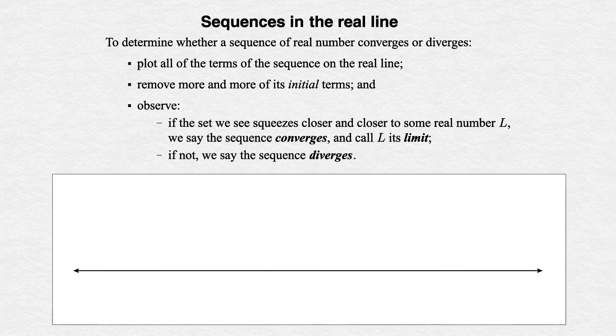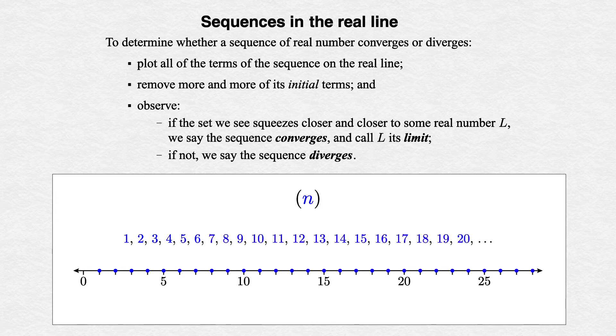Let's look at three examples to see this in action. Consider the sequence n: 1, 2, 3, 4, 5, etc. As we remove more and more initial terms, the terms left are larger and larger, so they don't squeeze toward any real number. Thus, this sequence diverges.